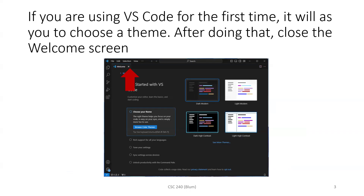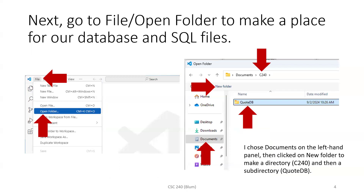I open up Visual Studio Code. If you're opening it for the first time, it will ask you what theme you want — whether you like to work dark or light, or if you need high contrast. I'm going to choose Light Modern. Now we want to set up a place where we are going to make our database, queries, and so on.